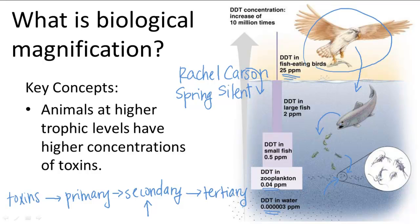Because humans eat fish too, fish that had accumulated DDT would pass the DDT on to humans that ate those fish. Because of this book, which brought widespread attention to the detrimental effects of DDT, in 1972 DDT was banned from the US. This is a classic example of biological magnification and shows how a small mistake can quickly create a snowball effect in the ecosystem.